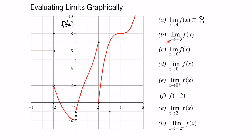Let's look for the limit as x approaches negative 3. We locate negative 3 right here. For values less than negative 2, this function is defined — it's a straight line, y equals 6. As we approach negative 3 from the left, our f value is 6. Coming in from the right side, our value is also 6. Therefore, the limit as x approaches negative 3 is 6, because the left and right-hand limits are the same value, 6.